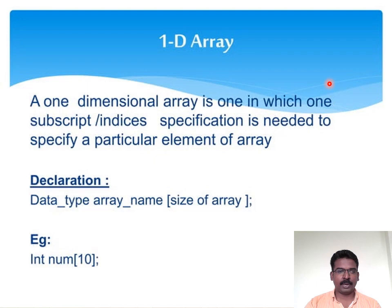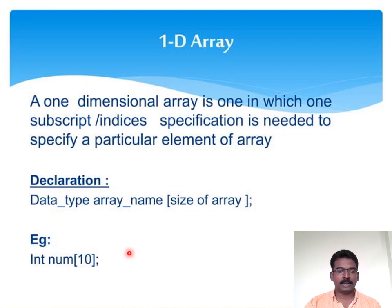The definition for a one-dimensional array: a one-dimensional array is an array which has only one subscript. As you can see in this example, the array named 'number' has only one subscript, so it is called a one-dimensional array. In another way, an array which has memory locations in a single direction is termed a one-dimensional array.